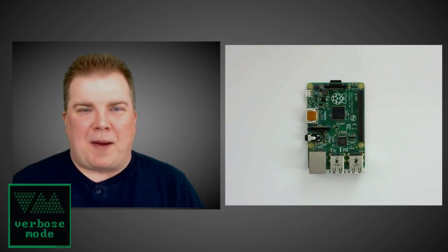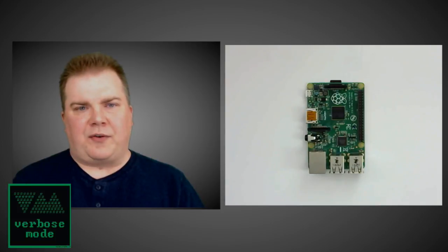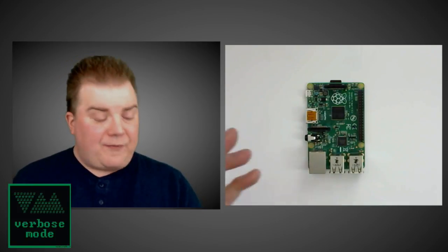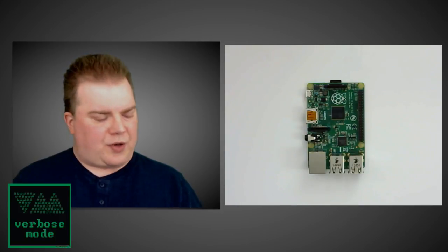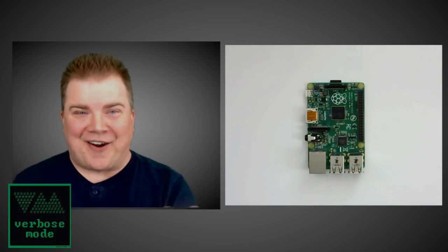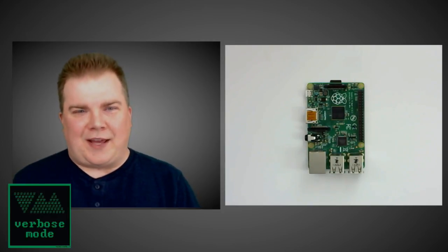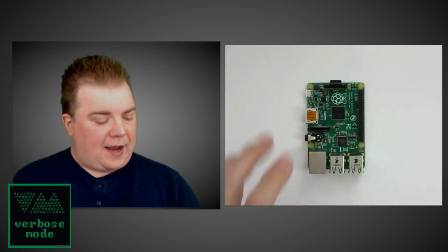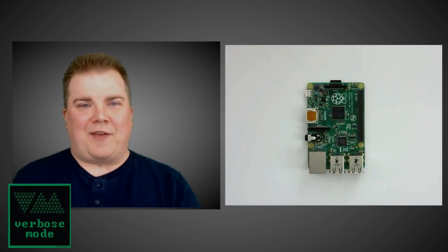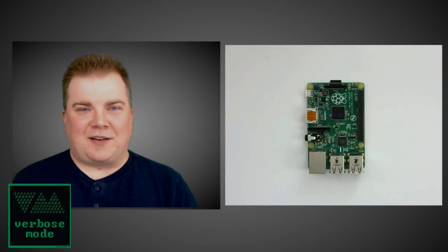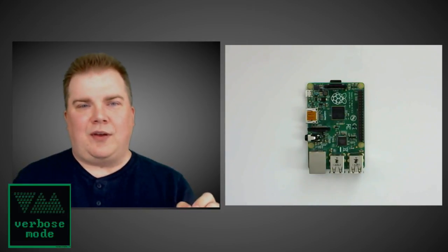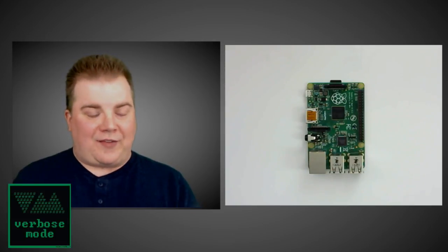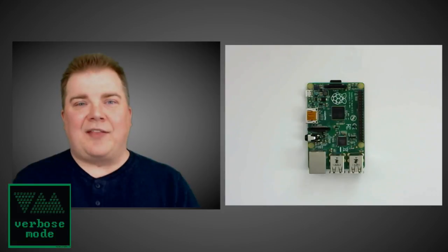It wasn't long before we had the Pi 2, which massively increased processing power and memory — same form factor, same $35 price point, but a much more powerful machine. Then we had the Pi 3, which did something absolutely amazing. For my projects I'd been dedicating a USB port to a Wi-Fi dongle to connect to the network. The Pi 3 has Wi-Fi and Bluetooth built directly onto the board. So for that same $35 machine, I don't have to add extra accessories to get connected — it can go straight into a project already connected to the network.